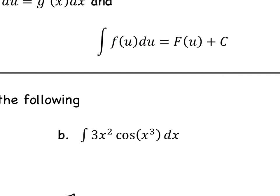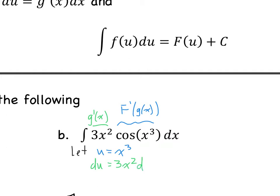Let's try this next example: the integral of 3x squared cosine x cubed. Sometimes the hardest part is figuring out what the substitution should be. If we have cosine of x cubed as f prime of g of x, then 3x squared looks like g prime of x — the derivative of g. So if we let u be x cubed, then du is going to equal 3x squared dx. That covers that portion, that's our du, and here is our u portion. That seems to work out very nicely.